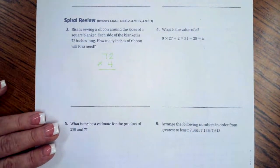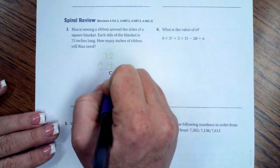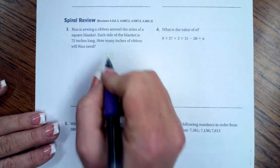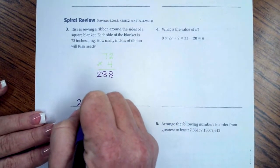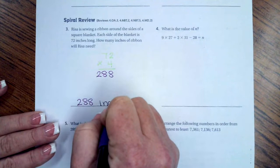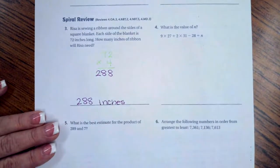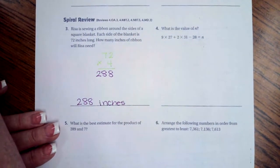So, 4 times 2 is 8. Sorry, 4 times 7 is 28. So 288 inches.